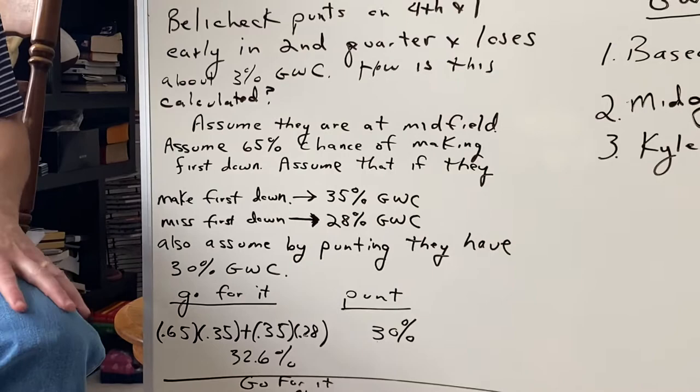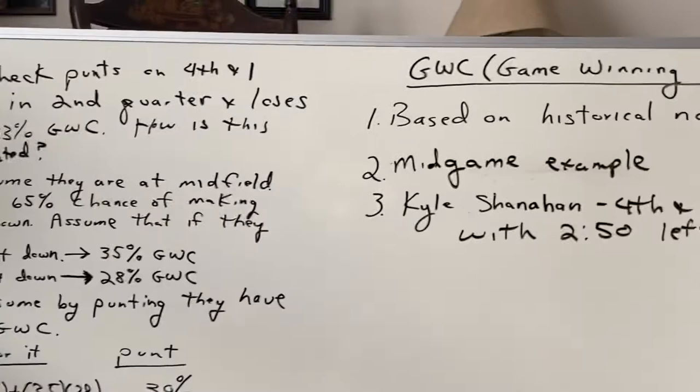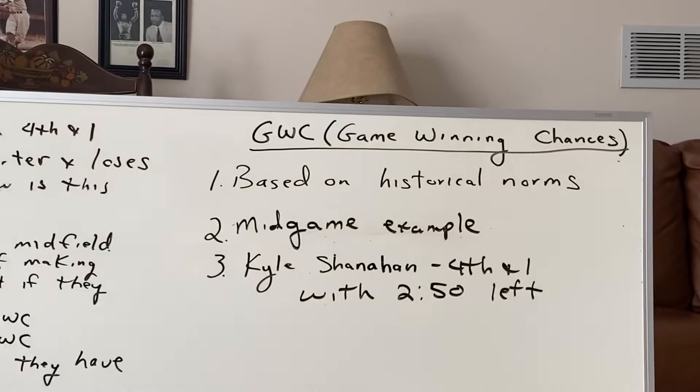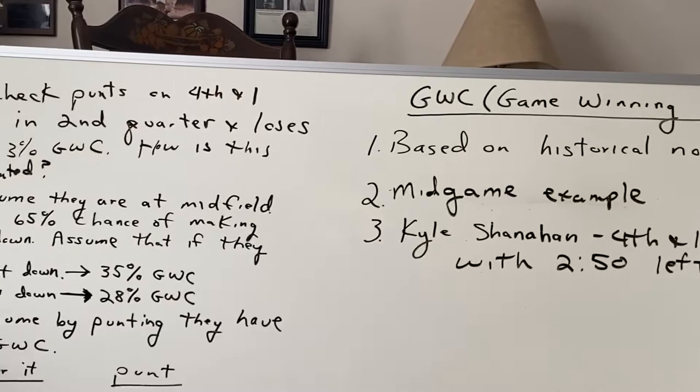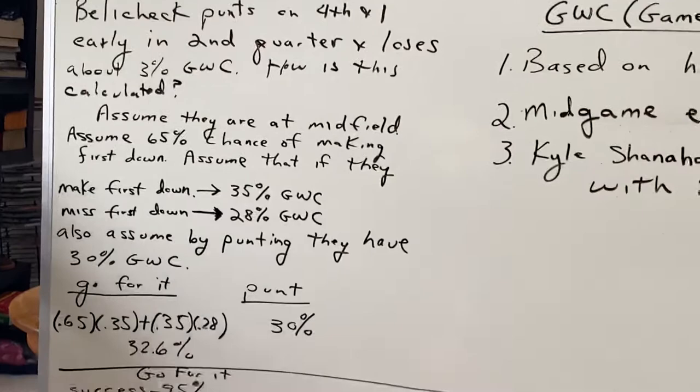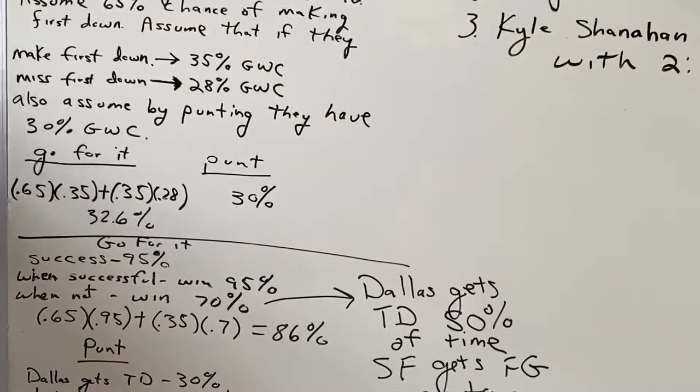Getting back to Kyle Shanahan — he was faced with a 4th and 1 with 2:50 left against Dallas. I think they were about midfield, and he punted. I was talking to my good friend P.J. McCauley — we were actually on the phone watching the game together. And to our surprise, he punted. To me, this was a no-brainer, and P.J. agreed that you've got to go for it. So I did some number crunching afterward.